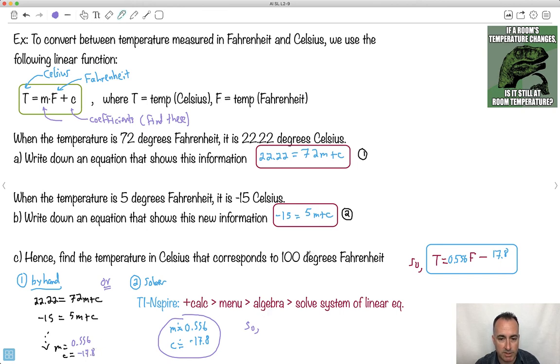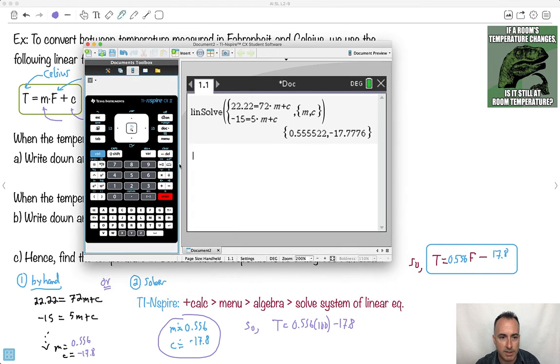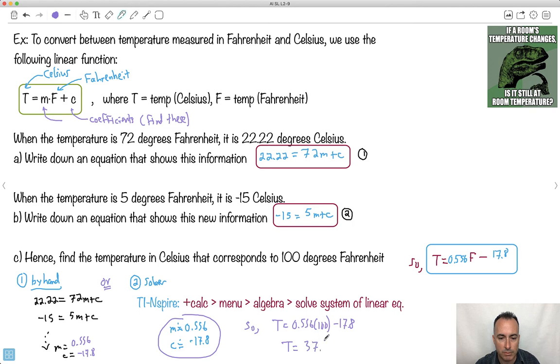So what do I do with this? Well, now I can use it to predict at 100 degrees Fahrenheit. So I go T equals 0.556 times 100 minus 17.8. I'll just do that on my calculator. It's better if you use all the decimals you can, so I'll say 0.55522 times 100, and I'll do that minus 17.7776. I end up with an answer to three significant figures. The temperature will be 37.8 degrees Celsius. And there is my final answer. Now I'm finally done.